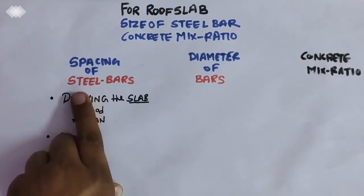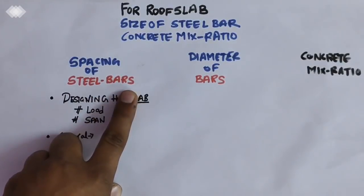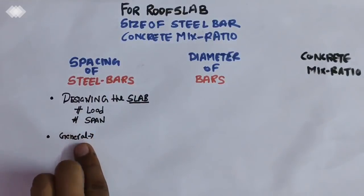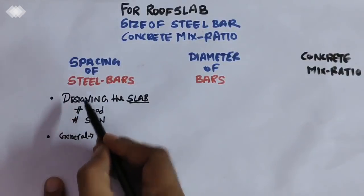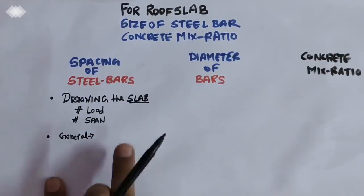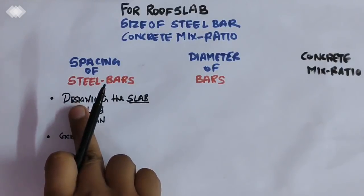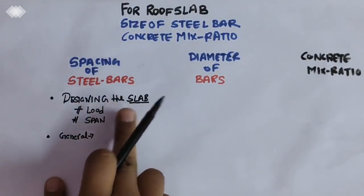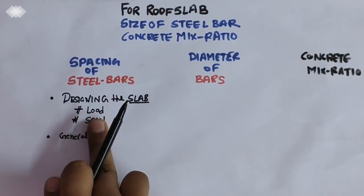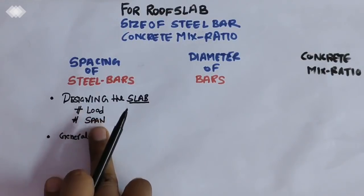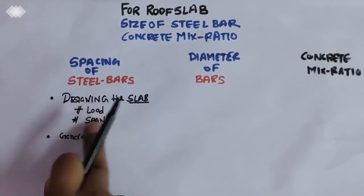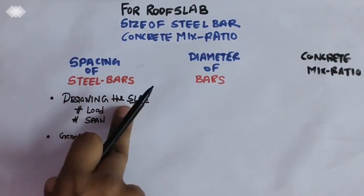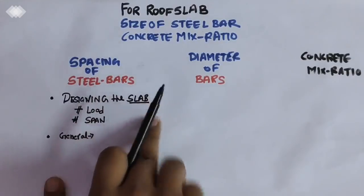We will discuss the spacing of steel bars. The spacing of steel bars is calculated on the basis of the load of the slab and the span of the slab. Using these parameters, we will design the slab.